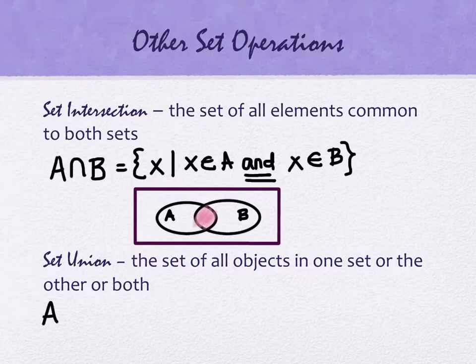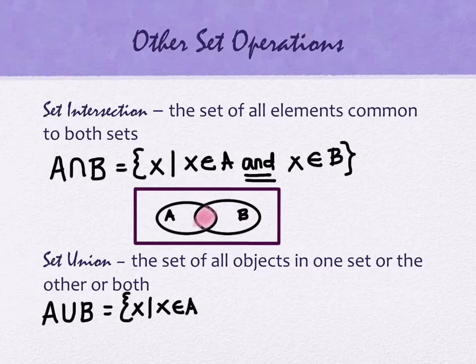A union. Union actually looks like a U. Isn't that friendly? A union B. This is the set of all X such that X is an element of A, or, and that's our operative word, X is an element of B.